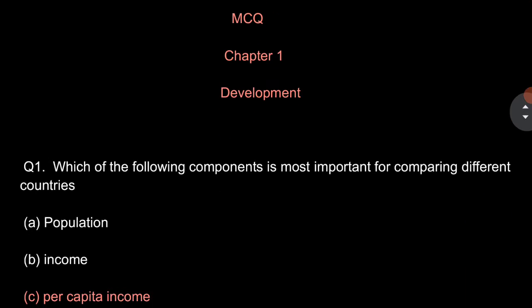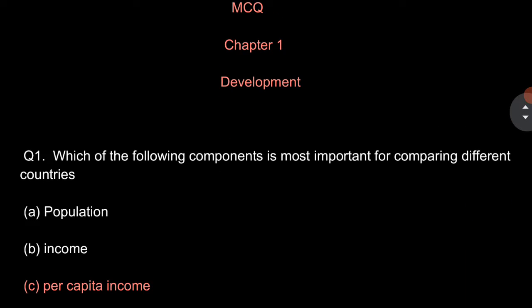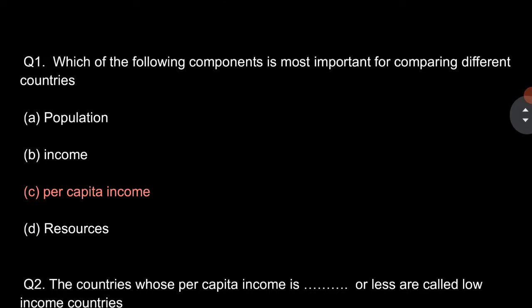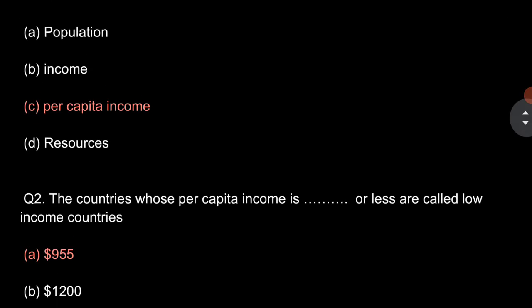First of all, question number 1: Which of the following component is most important for comparing different countries? And the answer is per capita income.